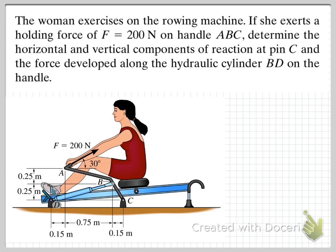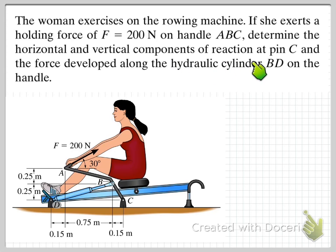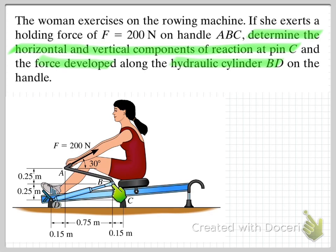The first thing to do is to read through the question and understand the problem. We have a woman on an exercise rowing machine, and we're told that she exerts a holding force of 200 Newtons on the handle. We're asked to determine the horizontal and vertical components of reaction at pin C, and also the force developed along the hydraulic cylinder BD.